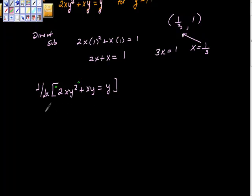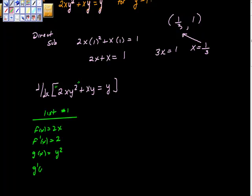I'm going to make a little list to set up my problem. I'm going to say f(x) equals 2x, so f'(x) equals 2, because I'm going to use the product rule here. g(x) equals y², and g'(x) implicitly is 2y·(dy/dx). I treated this as two equations — an inside equation and an outside equation.